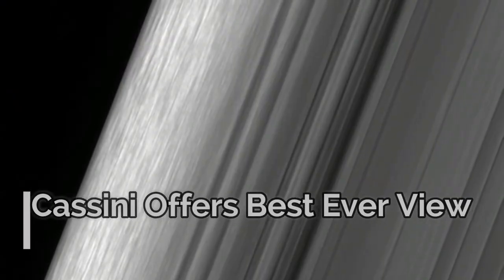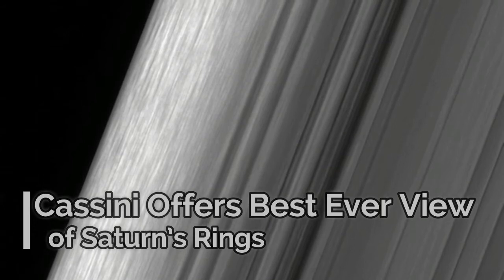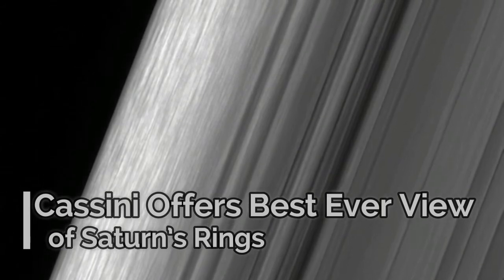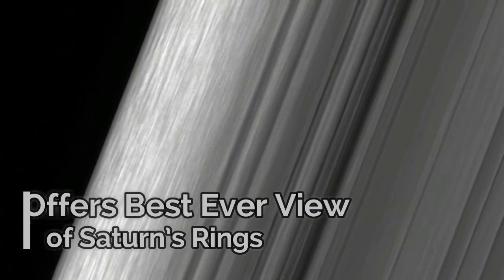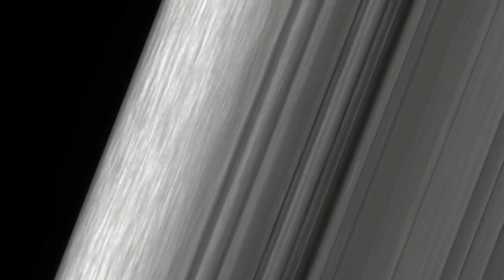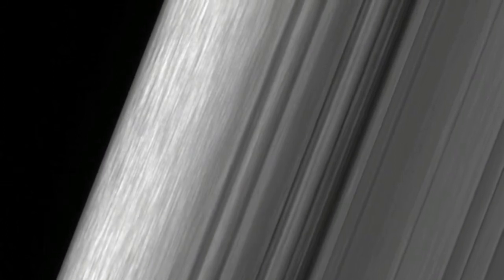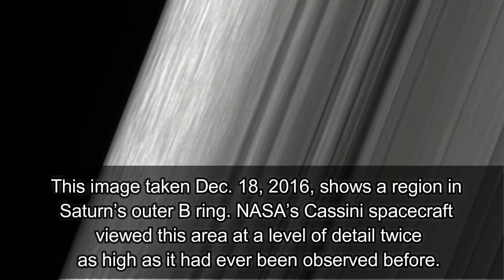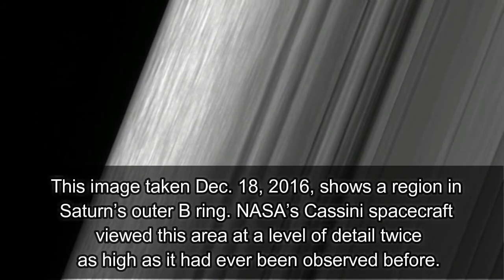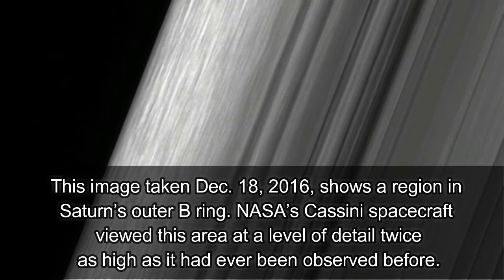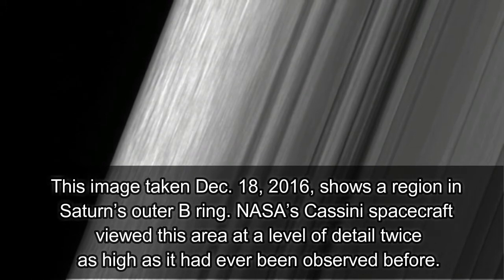Cassini offers best-ever view of Saturn's rings. A sequence of images captured by NASA's Cassini spacecraft last month are the most detailed pictures ever taken of Saturn's famous rings, revealing complex, unexplained bands and the movements of dozens of tiny icy moonlets spinning around the planet.